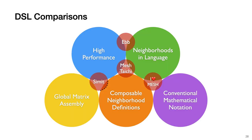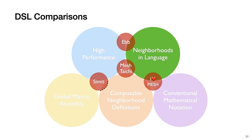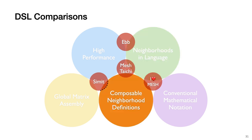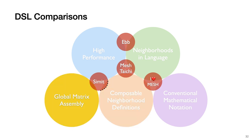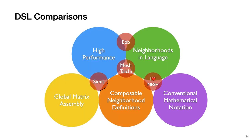We characterized the design space of mesh processing DSLs, including AIB, CIMIT, and Mesh Taichi in graphics, to motivate Ahad Mesh and understand its unique set of attributes. The diagram contains attributes such as high-performance support, whether neighborhood sets must be defined across two languages, whether user-defined neighborhood sets can be composed easily, whether the language supports global matrix assembly, and whether the syntax resembles conventional mathematical notation. As this diagram shows, mesh processing DSLs occupy different points in the design space.